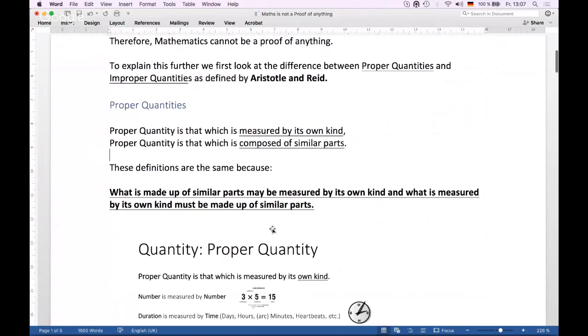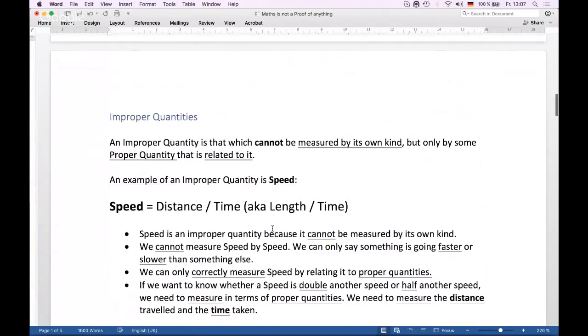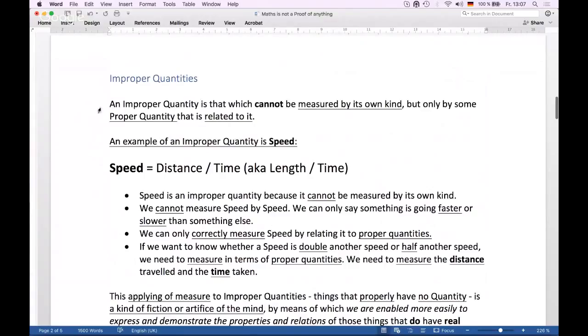Now, in opposition to proper quantities, there are things called improper quantities. And an improper quantity is defined as being that which cannot be measured by its own kind, but only by some proper quantity that is related to it. And a very well-known example of an improper quantity is the thing that we call speed. Speed is defined to be the distance traveled over the time taken, i.e. it's a unit of length divided by some unit of time. And we can basically see that speed is an improper quantity because it cannot be measured by its own kind. We cannot measure speed by speed.